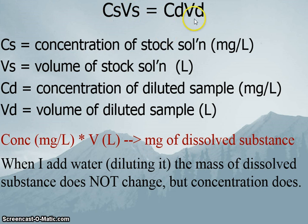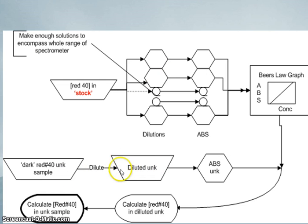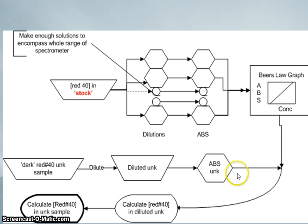So, back to our equation — when diluting our soda sample, we dilute it down to a concentration small enough that we can measure its absorbance, such that absorbance is less than one. We then have the absorbance of our diluted unknown solution. Armed with our Beer's Law graph, we know the mathematical relationship and can go from absorbance to concentration. From absorbance and Beer's Law, we can get the concentration of the diluted unknown.